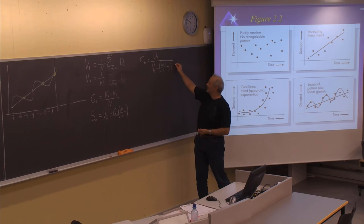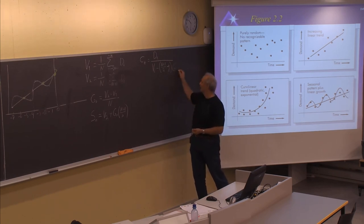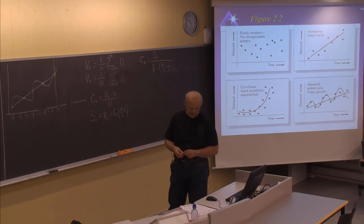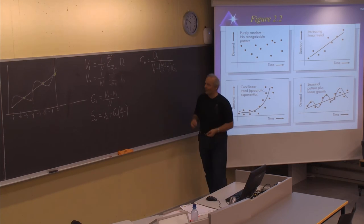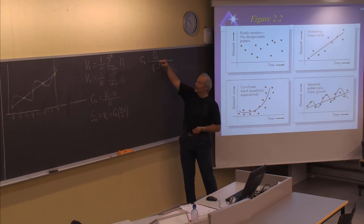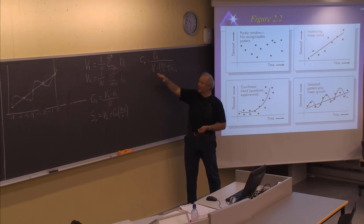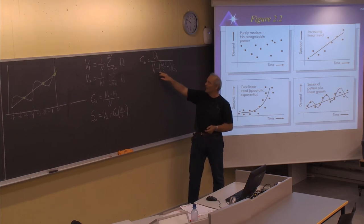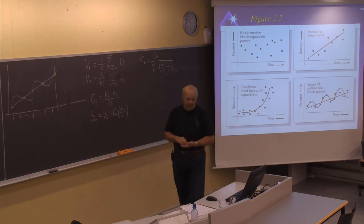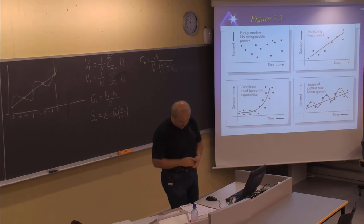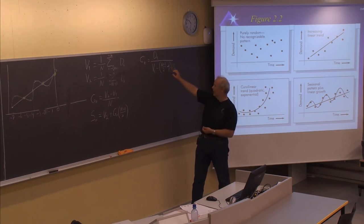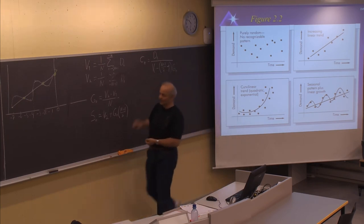We also need to multiply by the gradient — the current value of the gradient we have found. So the full formula for the seasonal factor is: take the demand for that particular period, divide by the average of the year that demand is in, minus (n+1)/2 minus j, and multiply by the gradient. This gives the seasonal factor for that particular season.